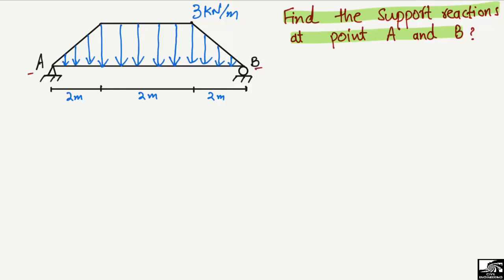This is a simply supported beam with a trapezoidal type of loading with a maximum magnitude of 3 kilonewtons per meter. The beam has been divided into three parts, each with a length of 2 meters, giving a total length of 6 meters. At point A (a hinge support), it can resist vertical and horizontal loads, but the horizontal reaction is zero since there is no horizontal load. The next support reaction is RB.